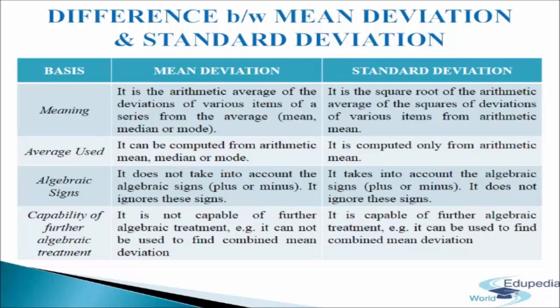The last basis is capability of further algebraic treatment. Mean deviation is not capable of further algebraic treatment because it cannot be used to find combined mean deviation. Whereas standard deviation is capable of further algebraic treatment — it can be used to find the combined standard deviation. These are the differences between mean deviation and standard deviation.